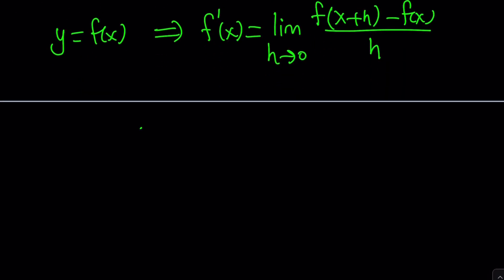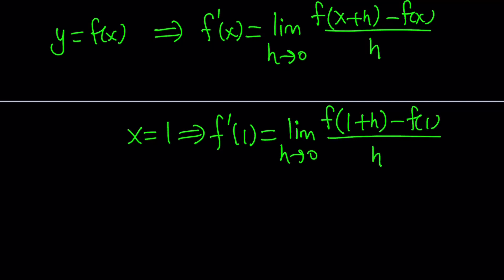So we're going to replace x with 1 on both sides. That's going to give us f prime at 1 equals limit as h approaches 0 of f of, be careful, you're replacing x with 1, not h with 1. So it's going to give you 1 plus h minus f of 1 divided by h.